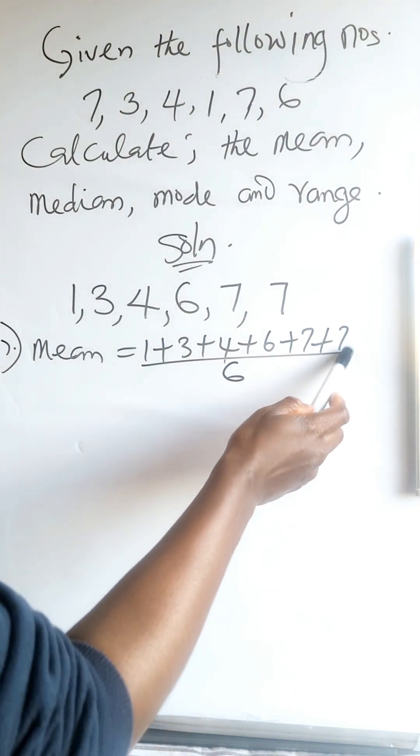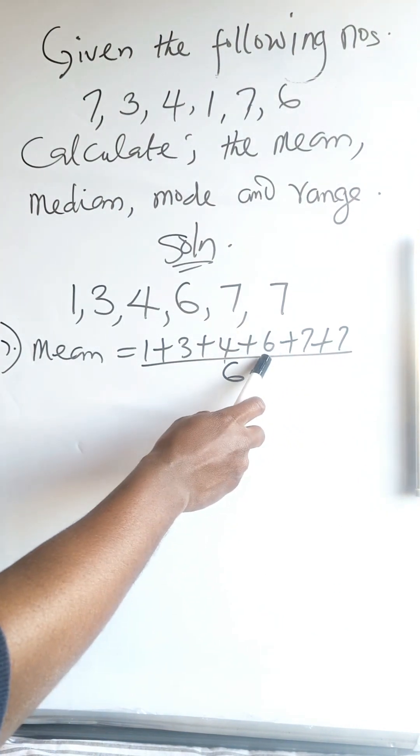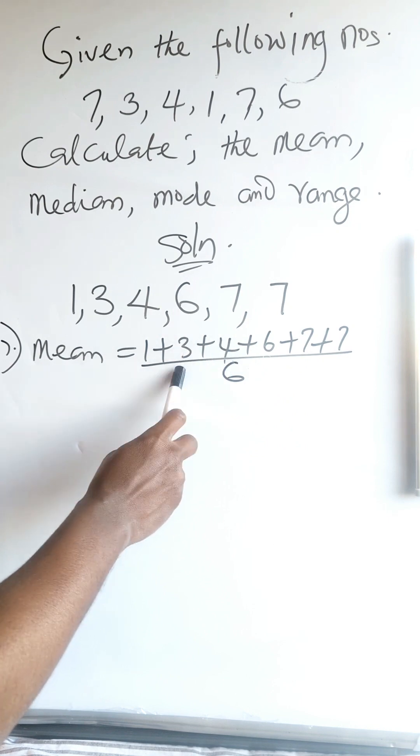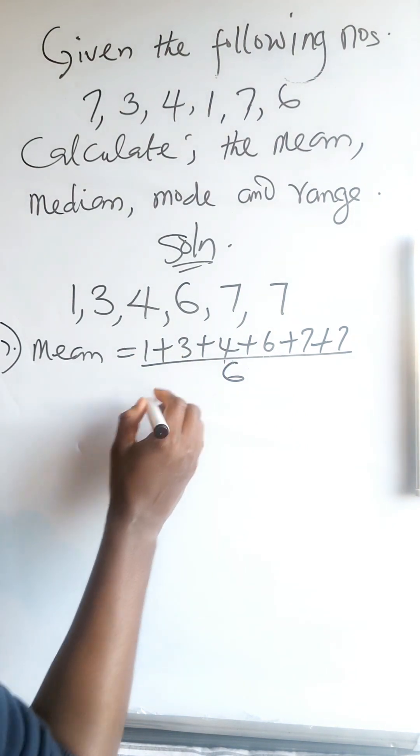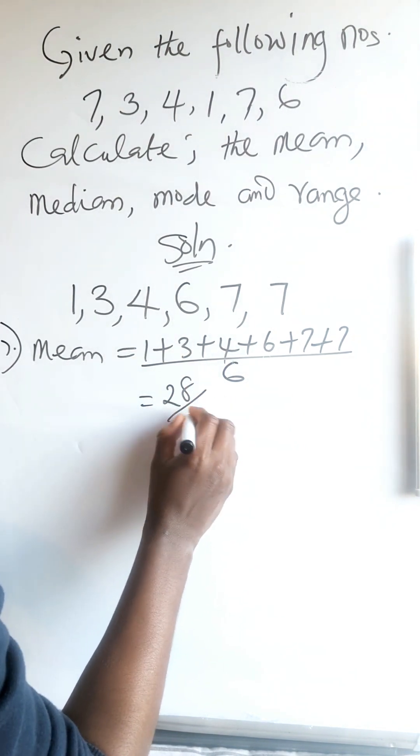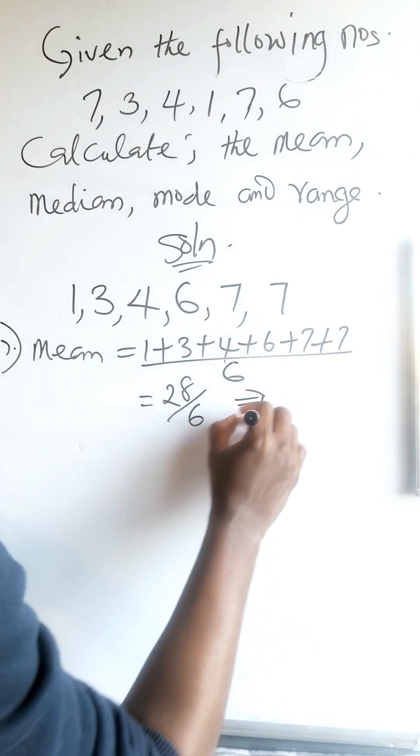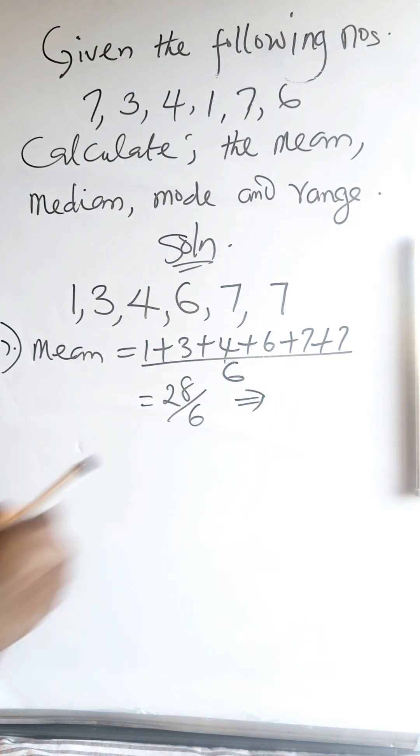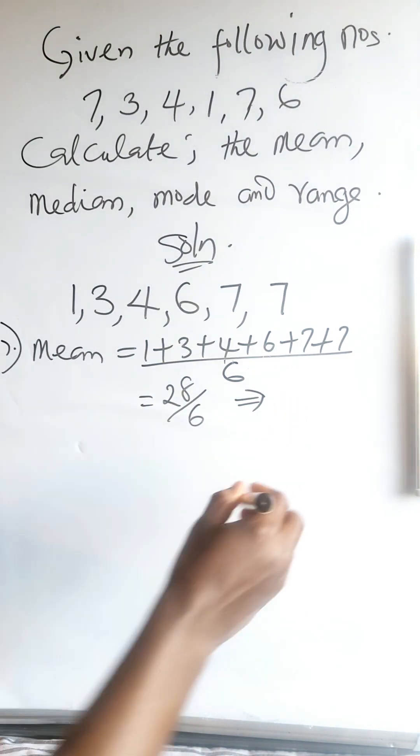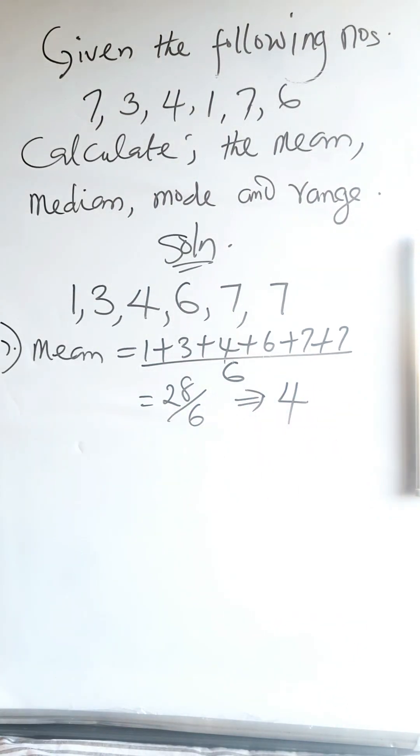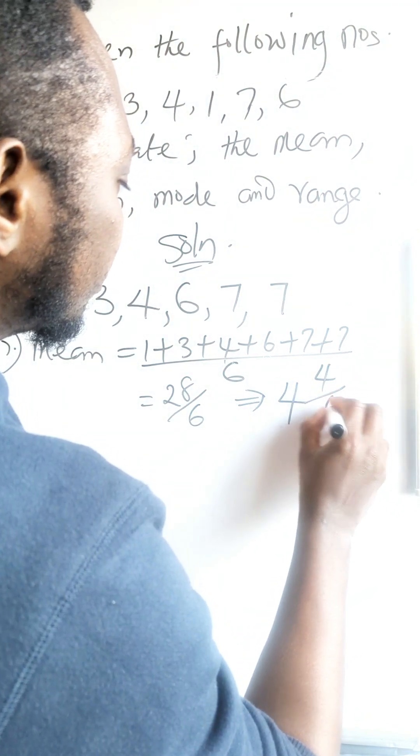So to add, let's start from here. 7 plus 7, 14. Plus 6, 20. Plus 4, 24, 27, 28. So we have 28 over 6. And if you divide further, 6 going to 28 is 4. 6 times 4 is 24, remaining 4 over 6.